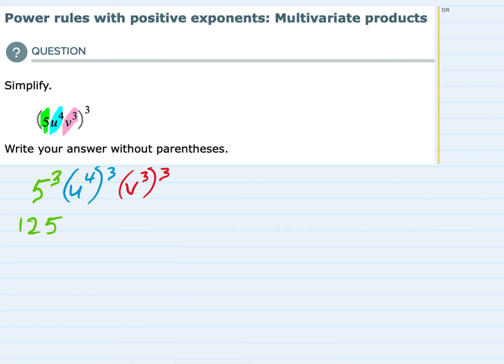And our rule for whenever we have a variable with a power inside the parentheses raised to a power outside the parentheses is that we have to multiply those powers. So u to the fourth to the third is going to be u to the twelfth. That's the 4 times the 3.